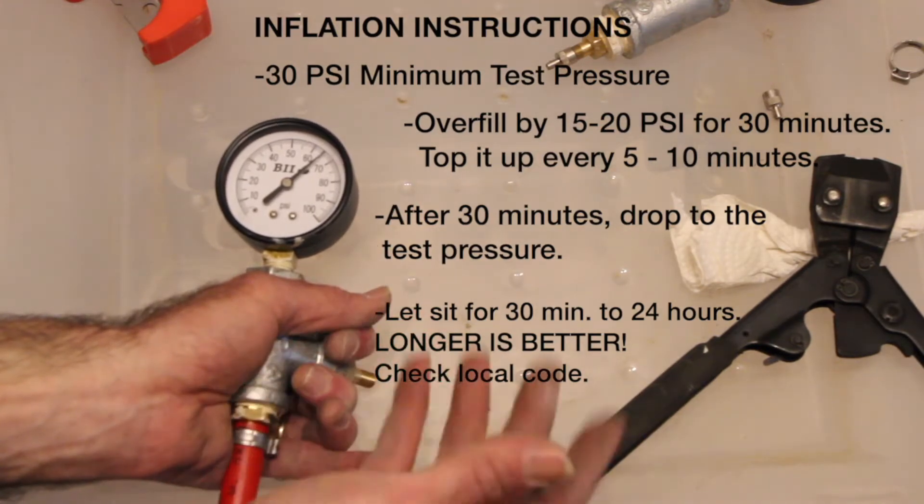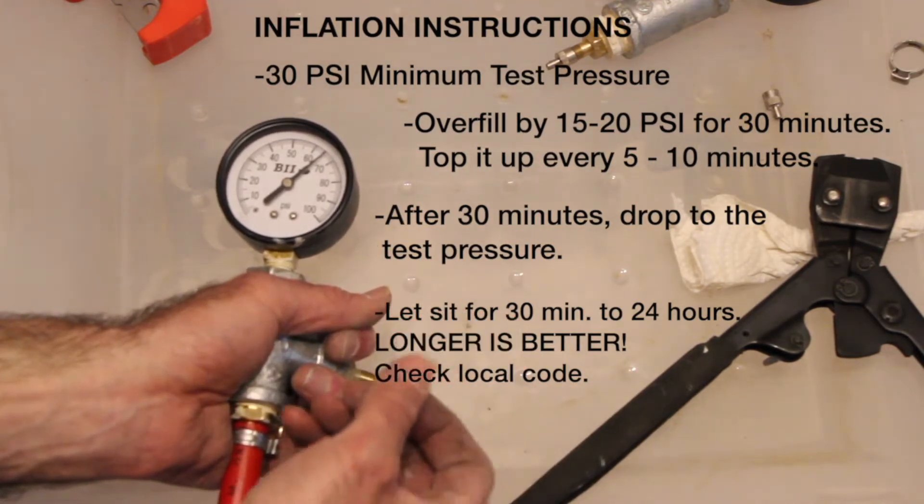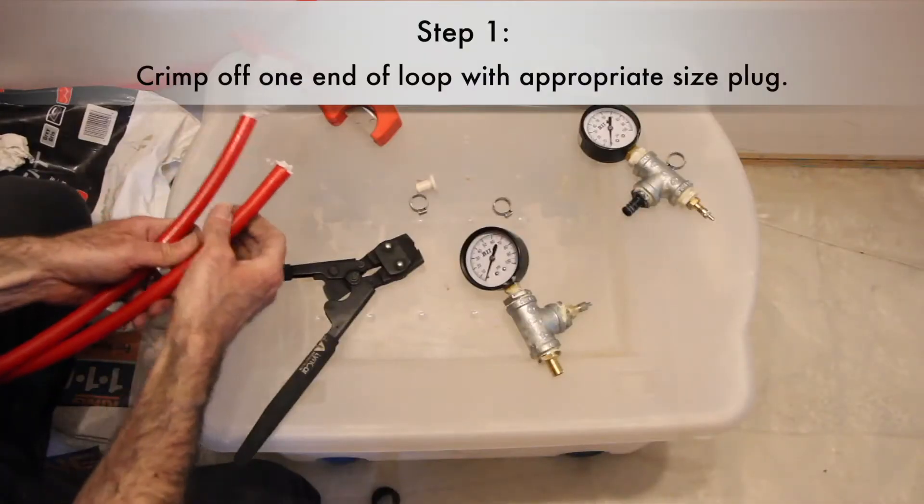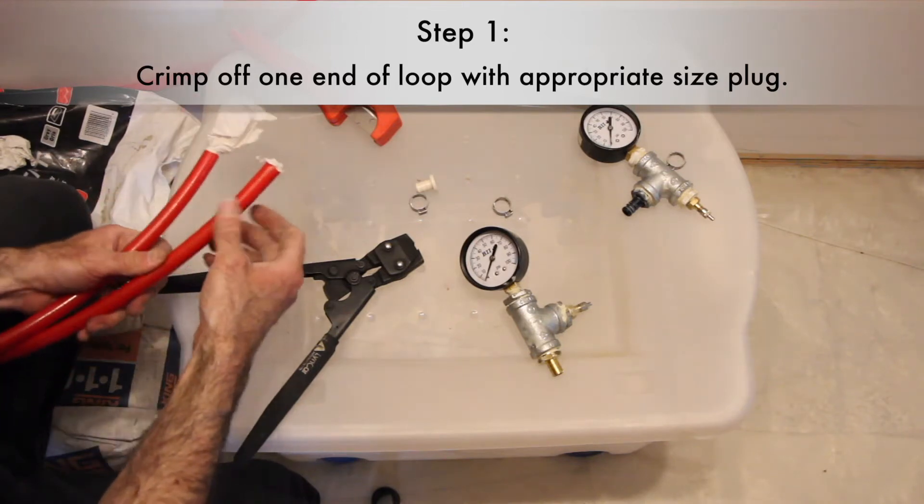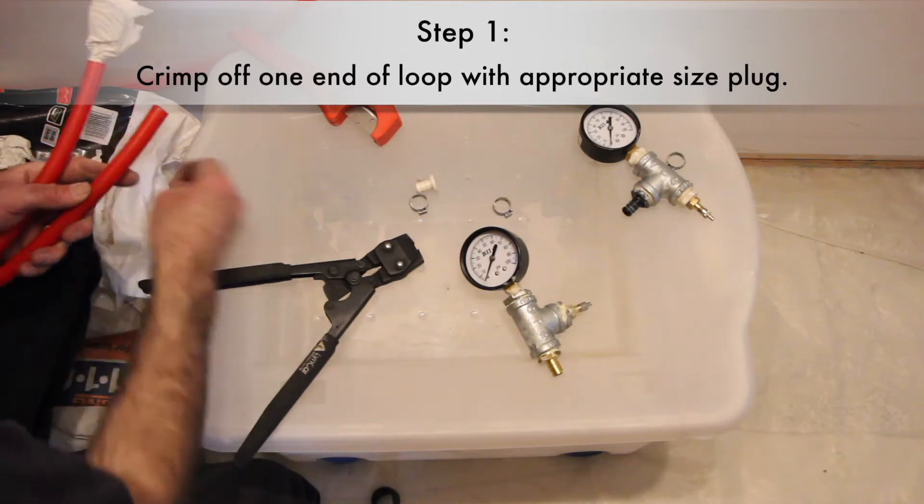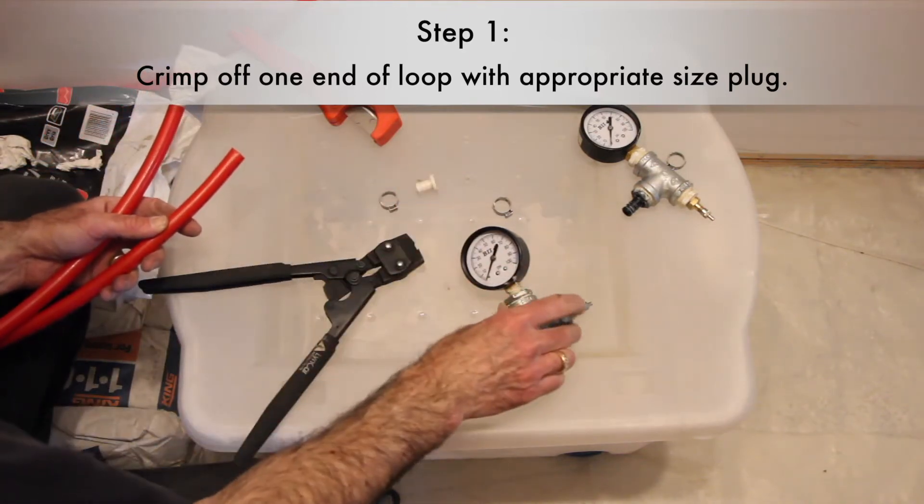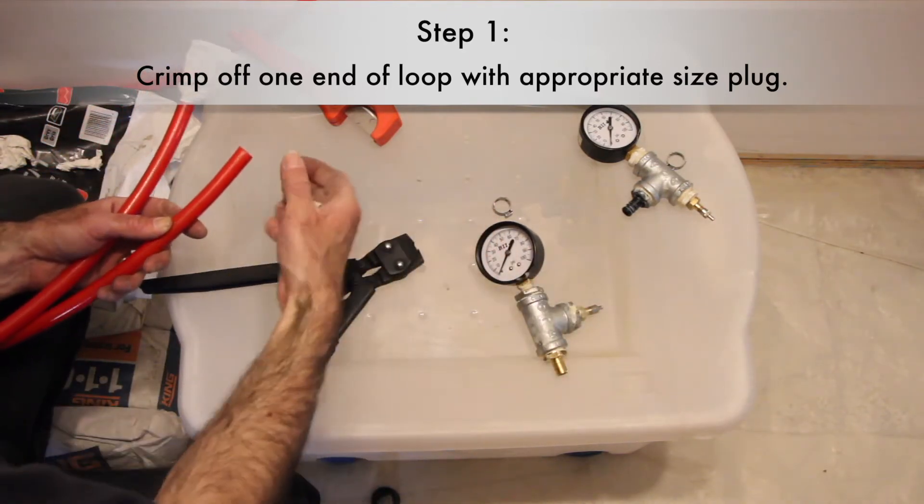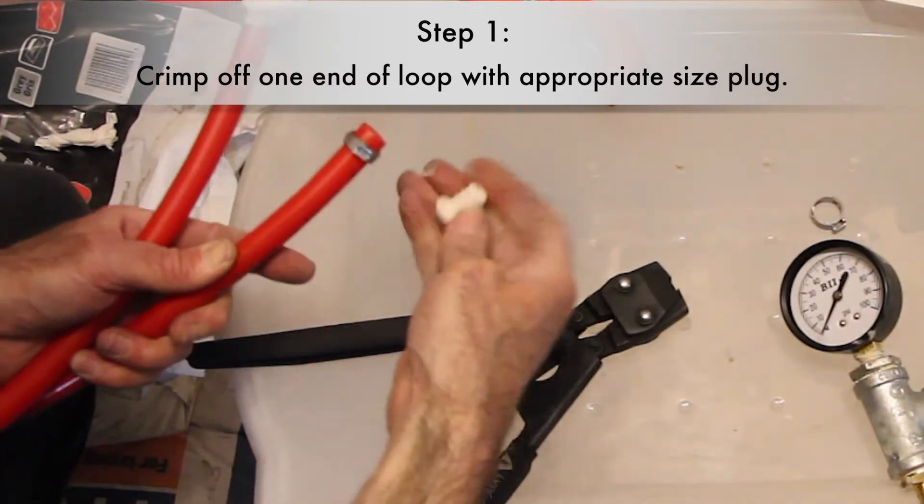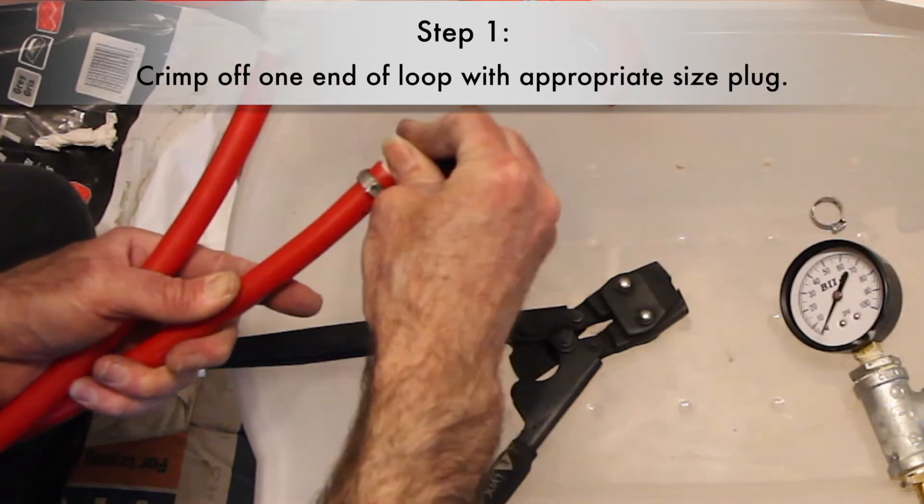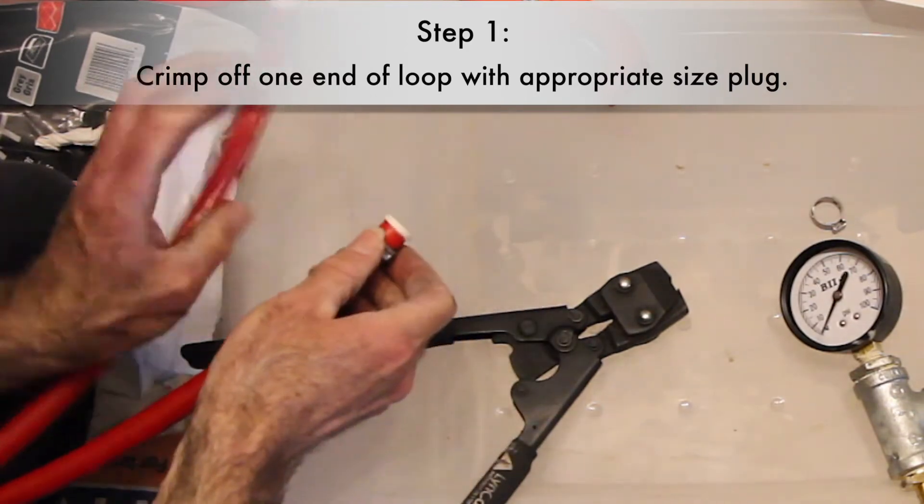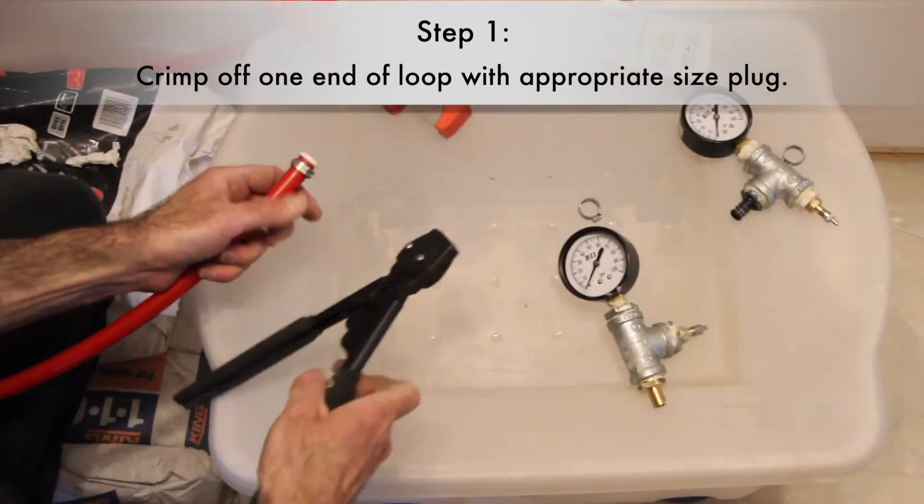So to do my pressure test, I'll take my send and return. On one of them, I'm going to use a crimp connector and a half-inch plug. Crimp that off.